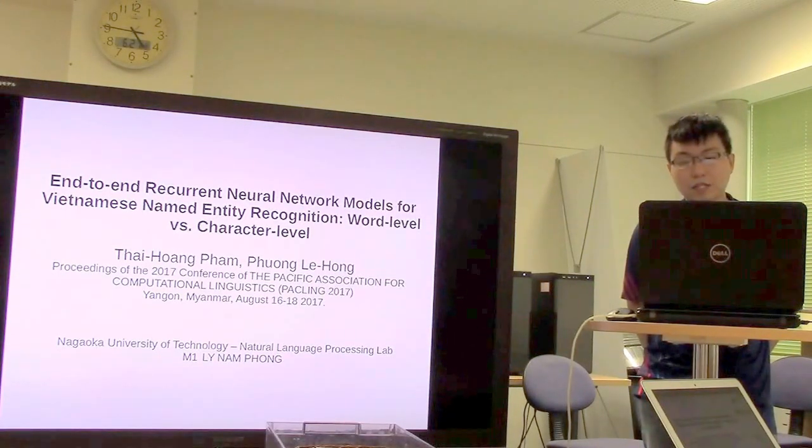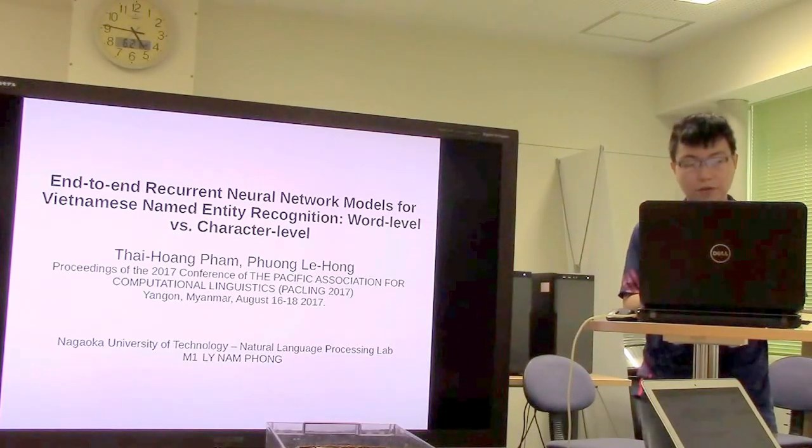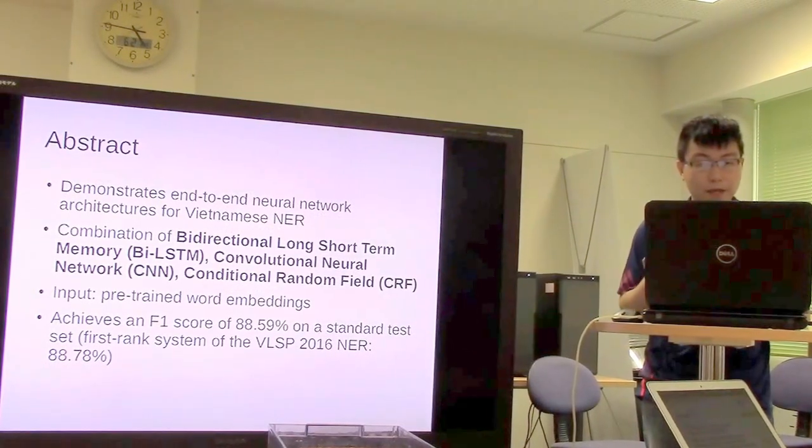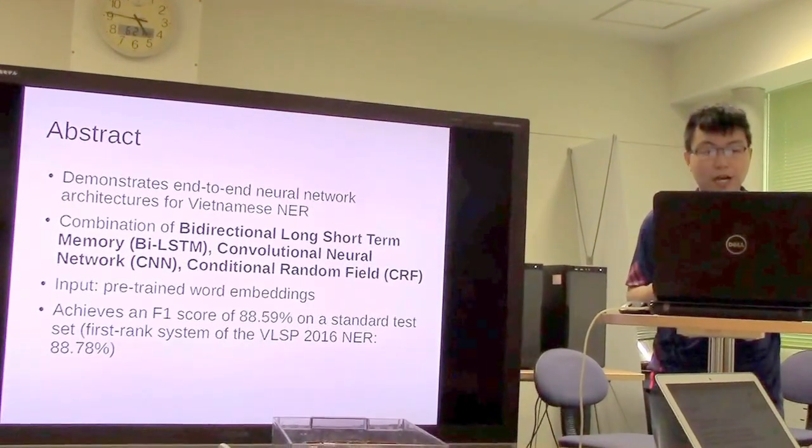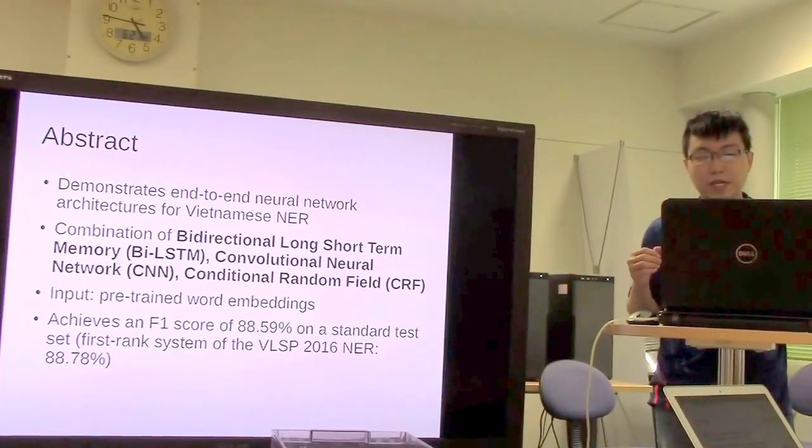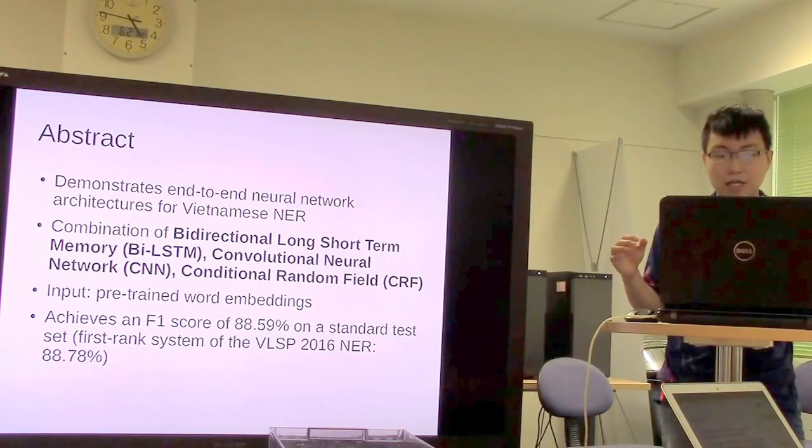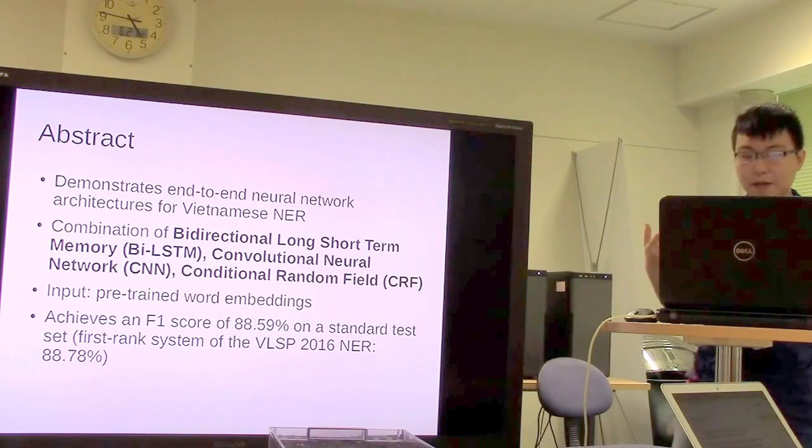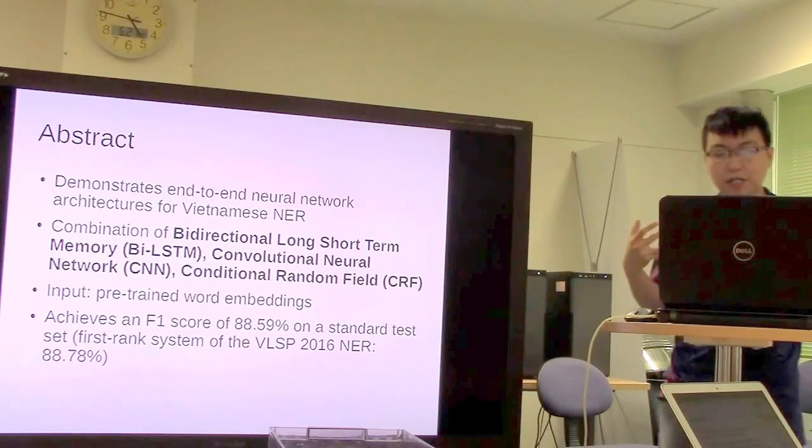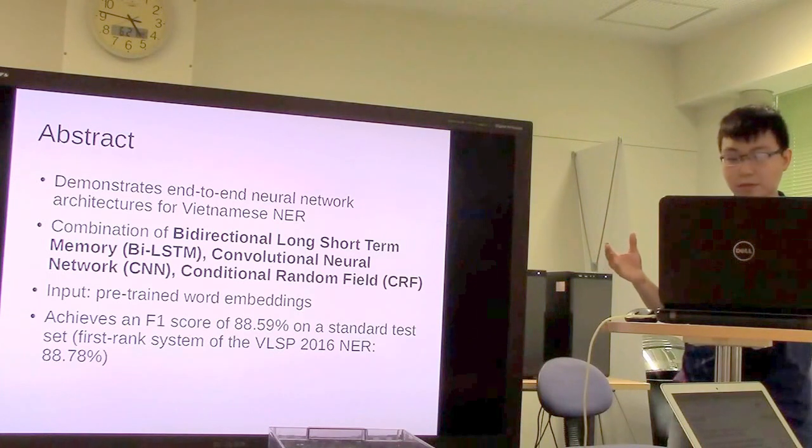Abstract: This paper demonstrates an end-to-end neural network architecture for Vietnamese named entity recognition. The system combines Bidirectional Long Short-Term Memory, Convolutional Neural Network, and Conditional Random Field.